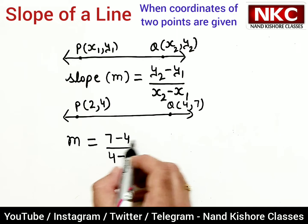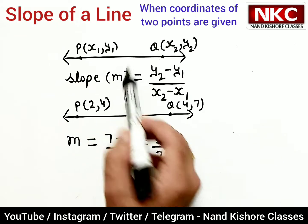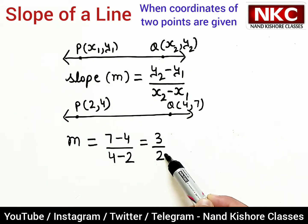So just subtract: 7 minus 4 is 3, and 4 minus 2 is 2. So slope of this line is 3 by 2. I hope you are clear with this concept.